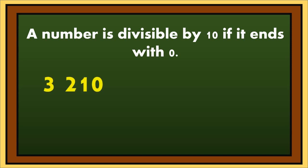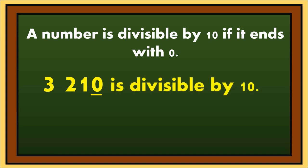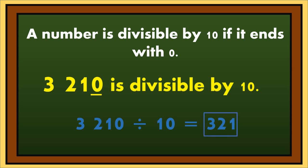3,210 ends with 0, or the digit at the 1's place is 0. So 3,210 is divisible by 10. If we divide 3,210 by 10, the answer is 321.